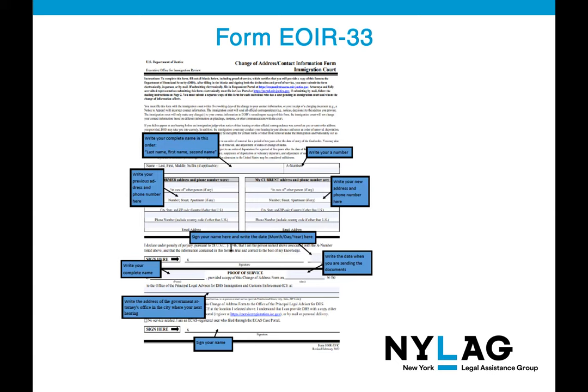Here is an image of what form EOIR-33 looks like. As pointed out in the image, there are areas for your complete name, A number, previous address and phone number, new address and phone number, your signature and date, and the address of the government attorney's office.